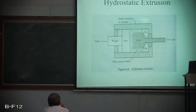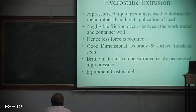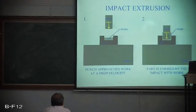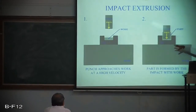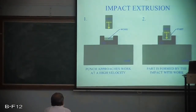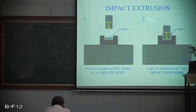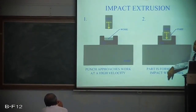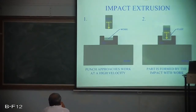Even brittle materials can be extruded easily because of the high pressure. In impact extrusion, the metal is kept inside a small cavity and a rapidly moving punch deforms the metal; this is usually performed in a cold state. Materials that can be deformed using impact extrusion include lead, tin, aluminum, copper, etc.